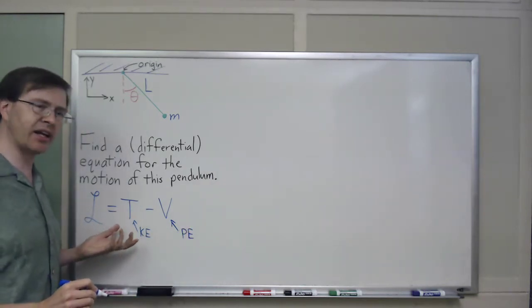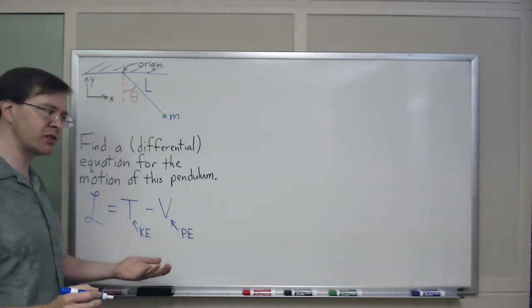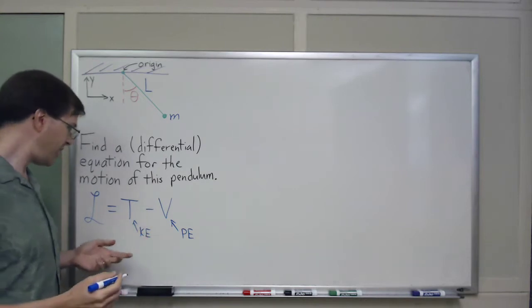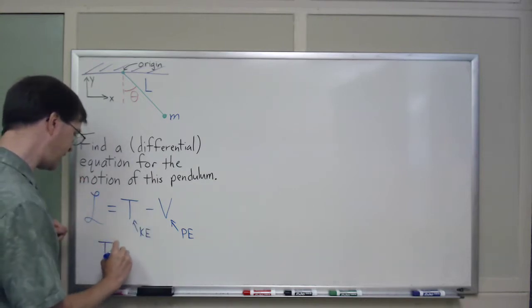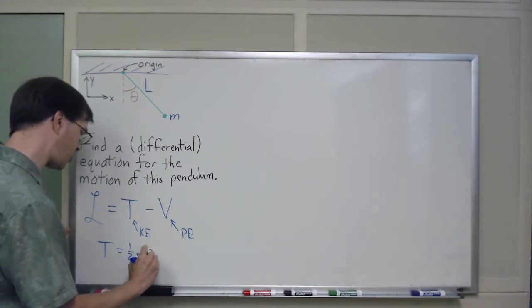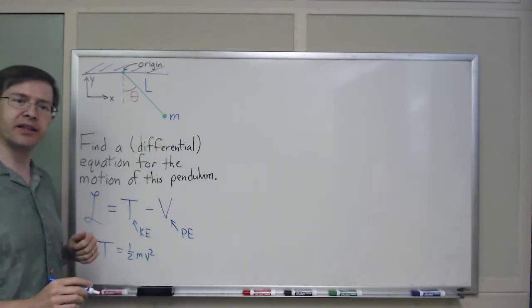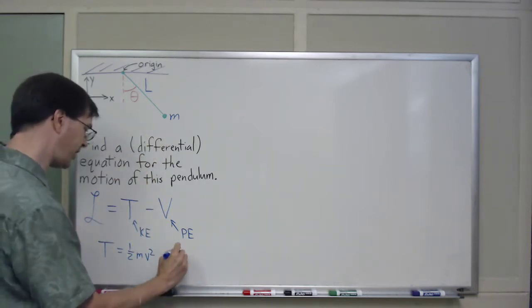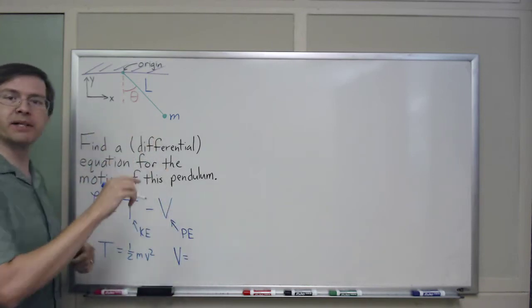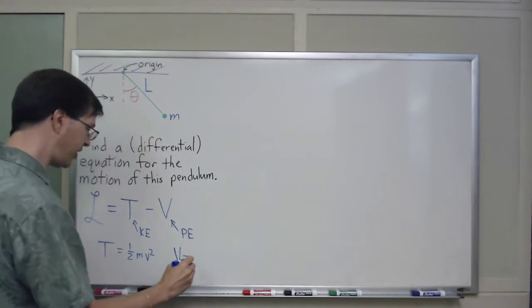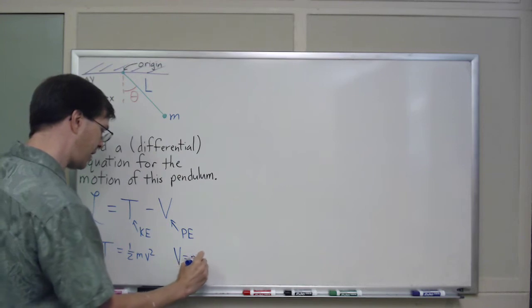This is kinetic energy and this is potential energy. T for kinetic energy is a little unfamiliar to beginning physics students, but it's what we use in all this. I know that T is equal to one-half mv squared for a point mass like this. And I know that gravity is the only potential energy in this story, V is just mgy.